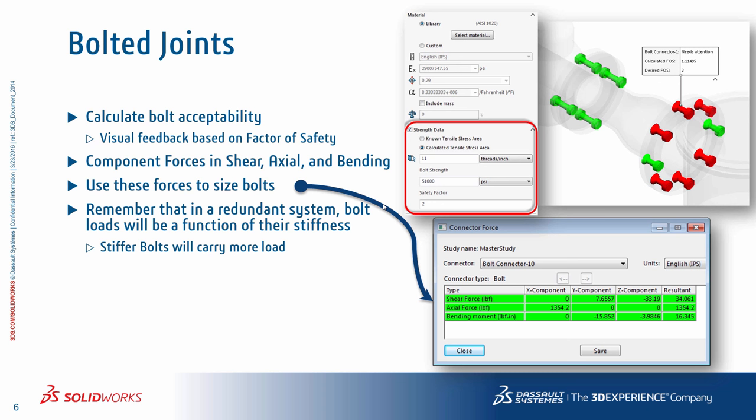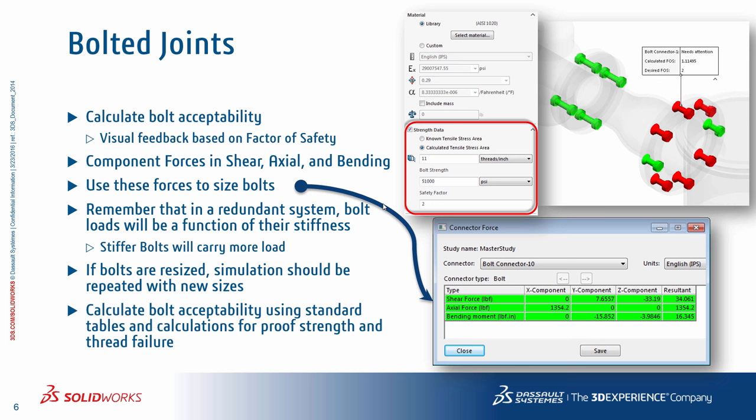In simplistic terms, stiffer bolts are going to carry more load, and the weaker the bolt, the less load goes through them. Remember that if you resize your bolts in a redundant system using a stiffer or weaker bolt, the loads will change, and you should rerun the simulation to make sure you have the correct forces going through the current bolt sizing. Also remember that the output from the bolt connector is not an end-all. The output is not going to tell you if the bolt is good enough. You still need to use standard calculations and tables to determine if your thread proof strength and other aspects of the fastener safety are actually satisfied.